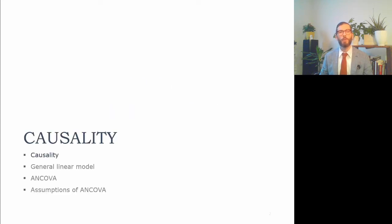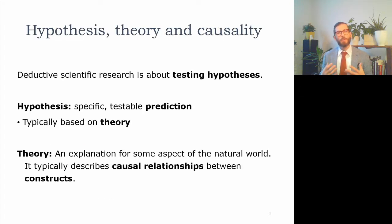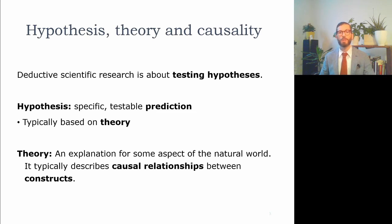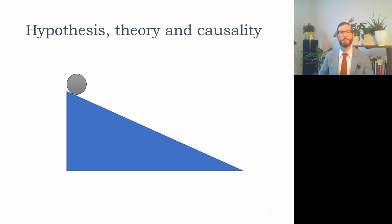Before we get into the method, I would like to address the issue of causality. When we conduct deductive scientific research, we typically have a theory-driven hypothesis which we're testing on a data set. We can define a hypothesis as a specific and testable prediction, and a theory as an explanation for some aspect of the natural world which typically describes causal relationships between constructs. Our statistical model represents those theoretical causal relationships, and the variables we measure represent our operationalizations of the constructs.